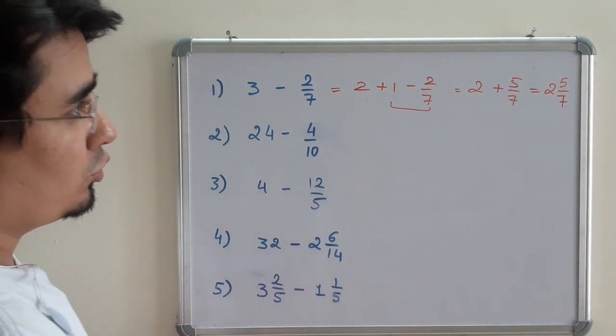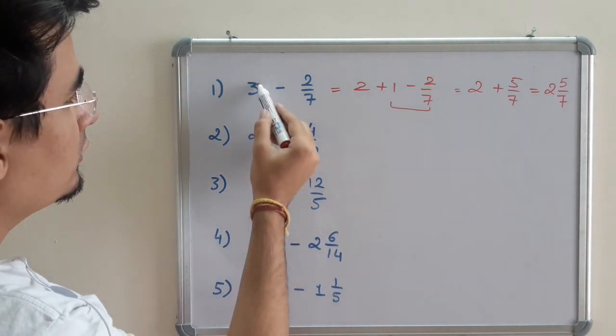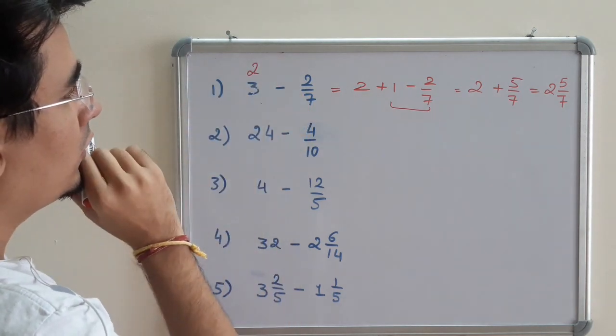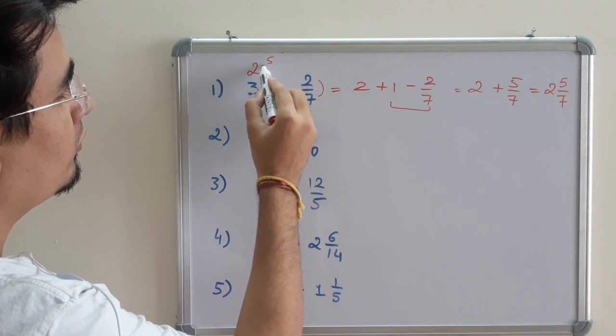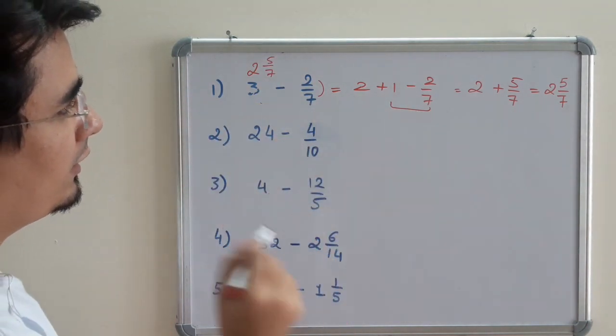So I would like to show you a faster method also. So what I have done, 3 minus 1 is 2, and this is 5 by 7. So within 1 second I can just find out. Let us see how.